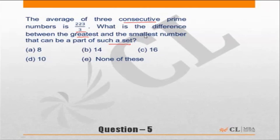If the average is 223 by 3, that means the sum should be 223. Average as per the question is 223 by 3, and sum is 223. This means each number is approximately around 75, so I need to look at three consecutive prime numbers.